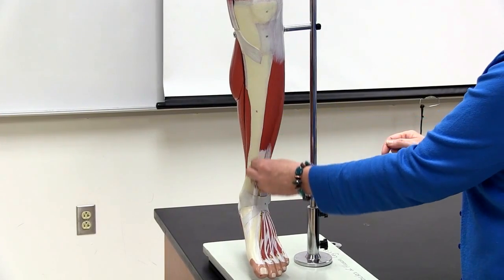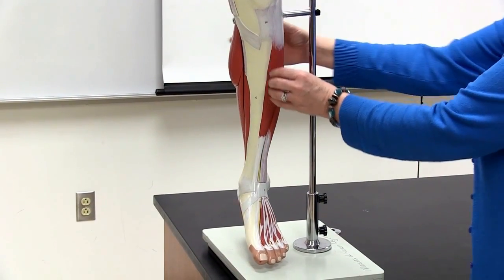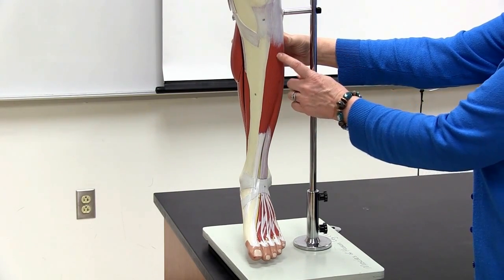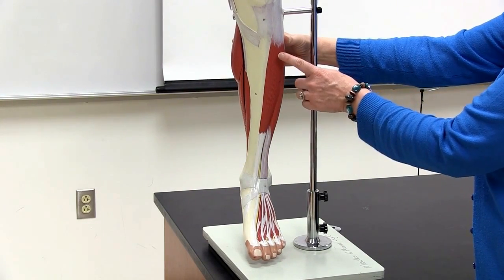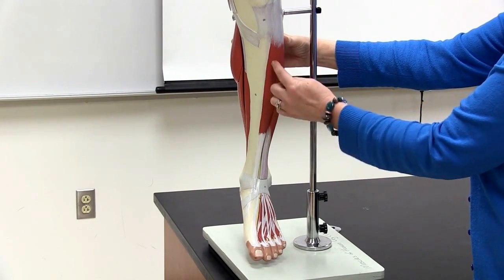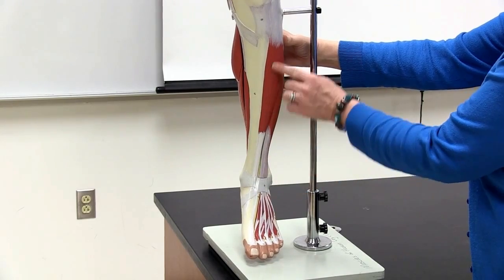So if we're starting here at the tibia bone, this first one is obviously on the front, on the anterior side of the leg. When you see this one, it will be easy. This one is called tibialis anterior, right next to the tibia on the front.